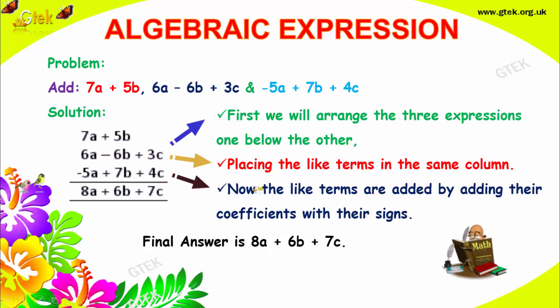Now the like terms are added by adding their coefficients with their signs. You can see plus, plus, minus. If it didn't specify, it's plus. So plus 7 plus 6 is 13, minus 5 is 8a.